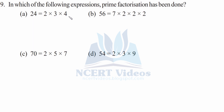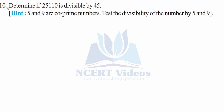Question 9: In which of the following expressions has prime factorization been done? For part A, 4 could be written as 2 × 2, so it is not fully prime factorized — false. For part B, all factors are prime — true. For part C, all factors are prime — true. For part D, 9 could be written as 3 × 3, so it is composite and not prime factorized — false.